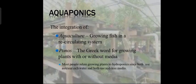Now, what is aquaponics? It is basically the integration of aquaculture and ponics. Aquaculture is growing fish in a recirculating system. And ponics is the Greek word for growing plants with or without media.